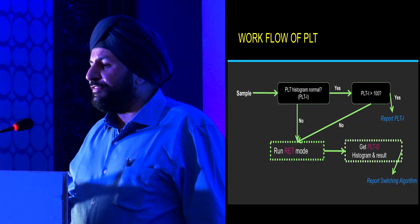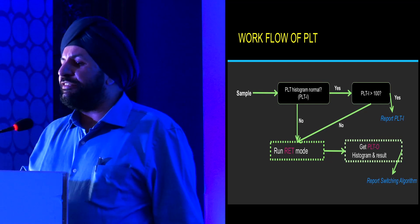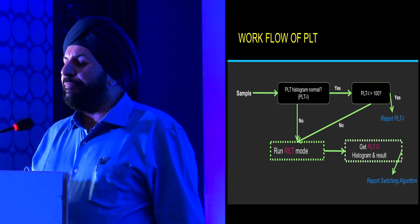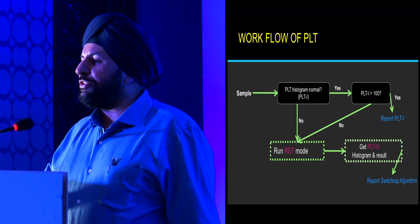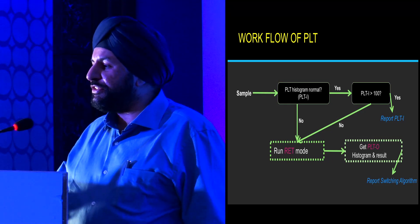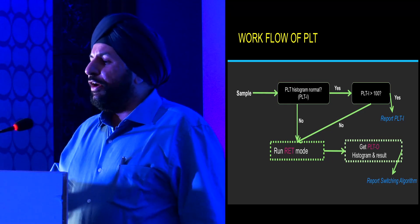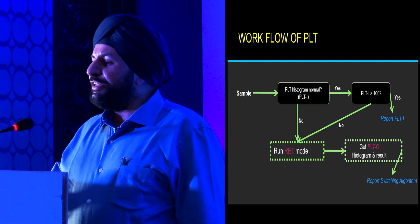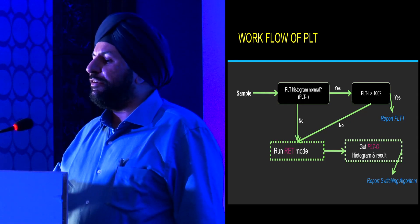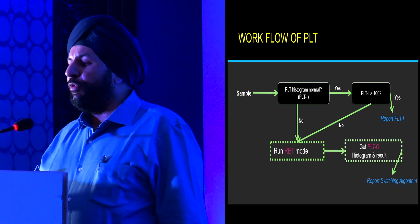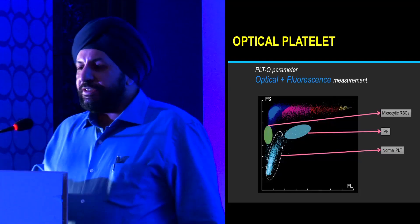This is the workflow of platelet counting as we do in our laboratory. All our platelets are subject to impedance-based counting first. If the platelet histogram is normal and the count is more than one lakh, we just report the impedance platelets as is. However, if the platelet histogram is abnormal or the platelet count is less than one lakh, we run the platelet in optical platelet mode and let the switching algorithm take over.